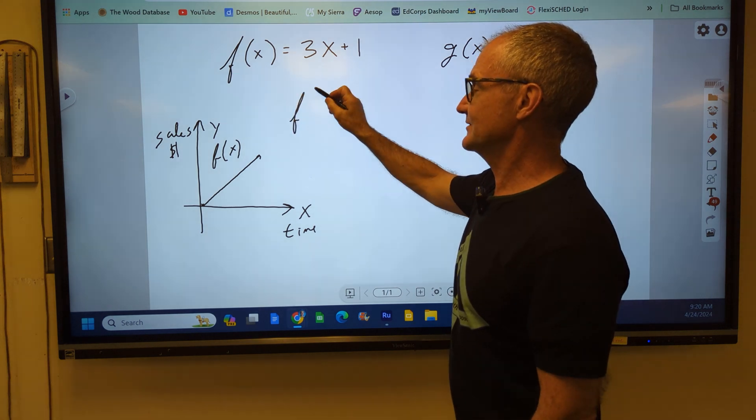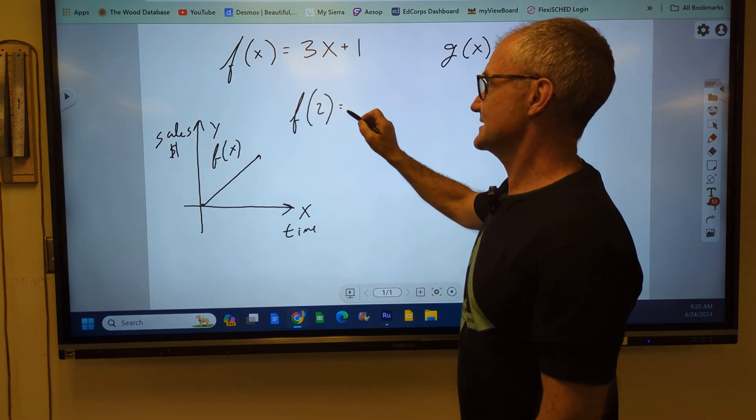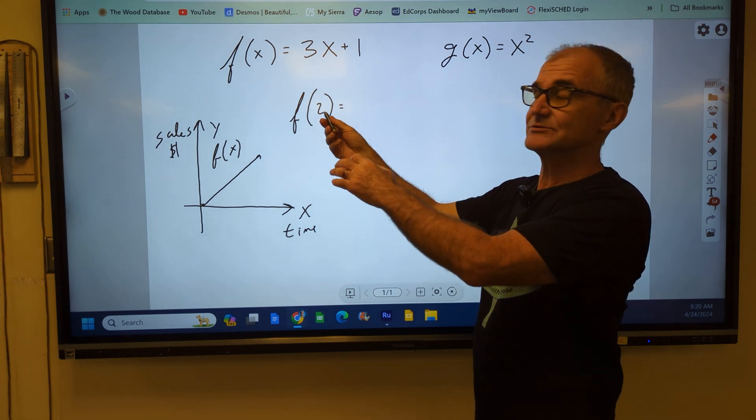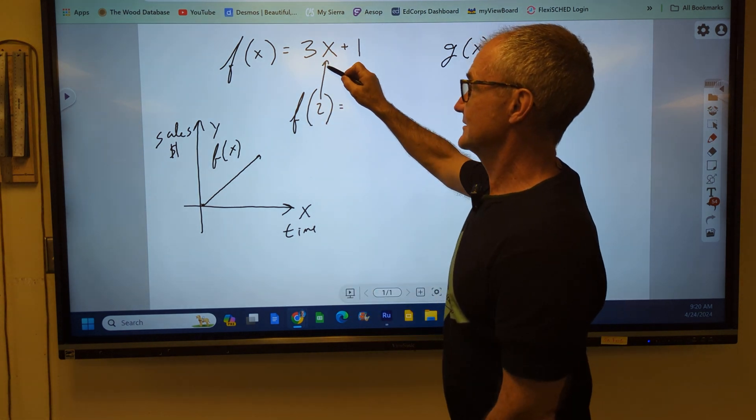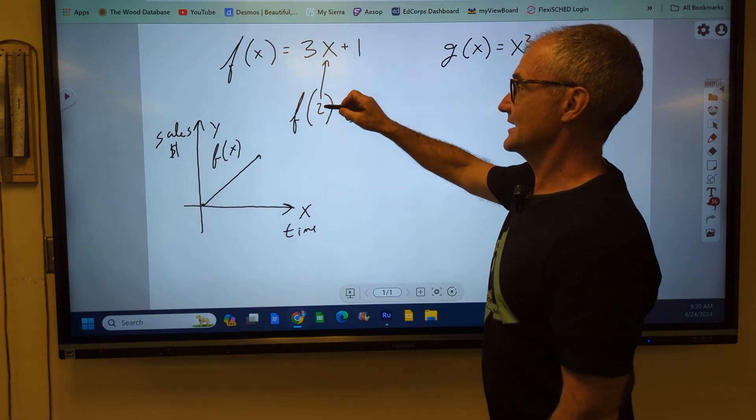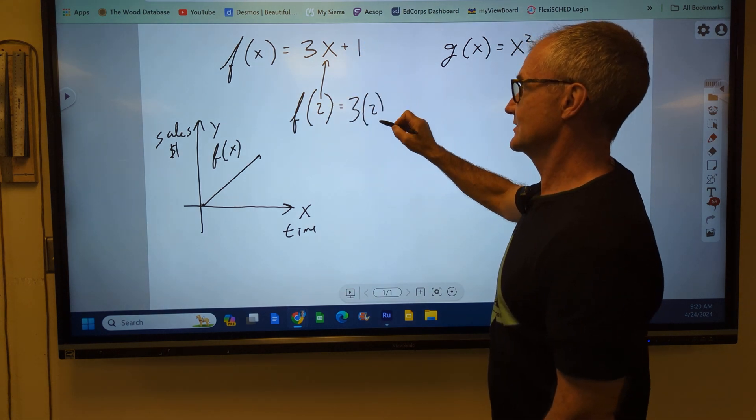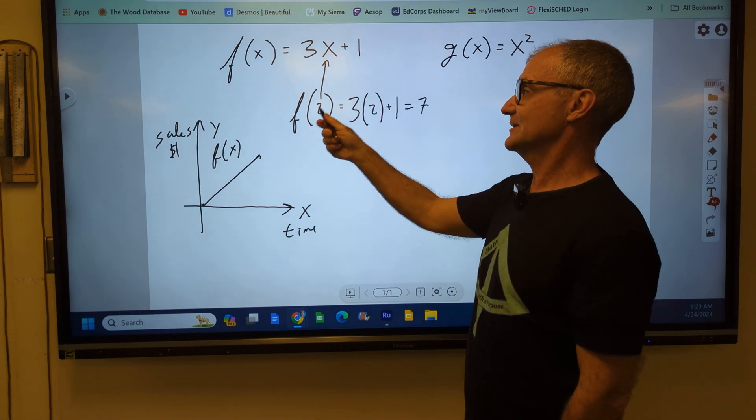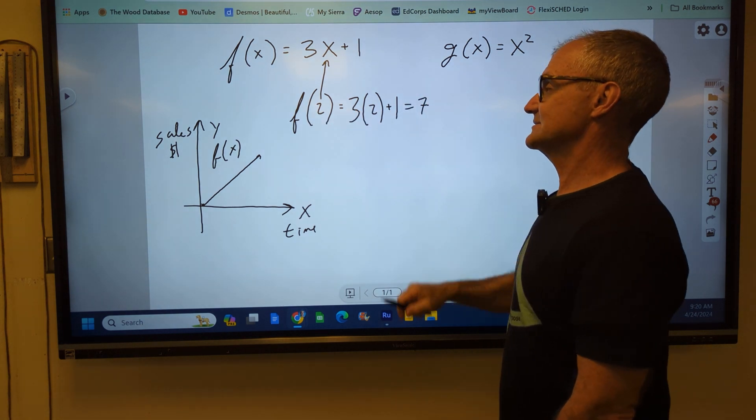If I have a problem like f of 2, that's saying in my f of x function, take the independent variable 2 and plug it in for x. So 3 times x, well x is now 2 plus 1. 3 times 2 is 6 plus 1 is 7. So f of 2 is equal to 7.